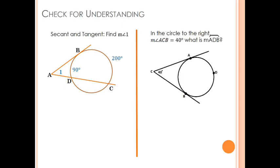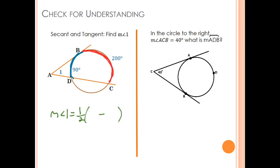That theorem also applies to tangents. The same theorem applies whether the line is a secant or a tangent. The only thing that changes is identifying the outer arc and the inner arc. For this example, to find the measure of angle one, we do one-half times the outer arc minus the inner arc. That's one-half times (200 minus 90), which is one-half of 110, giving 55 degrees.